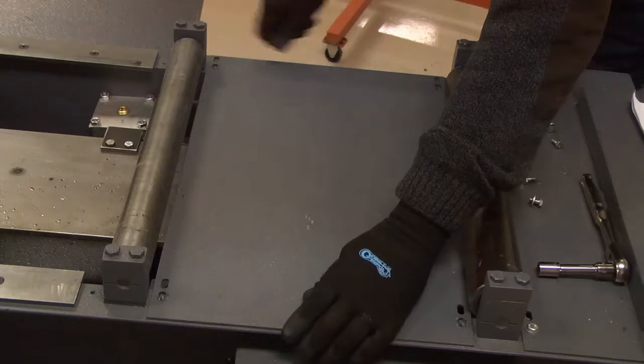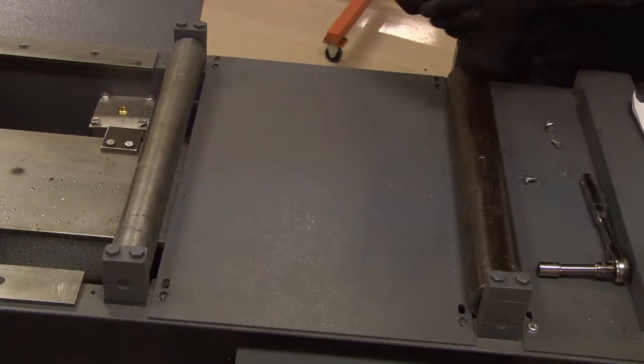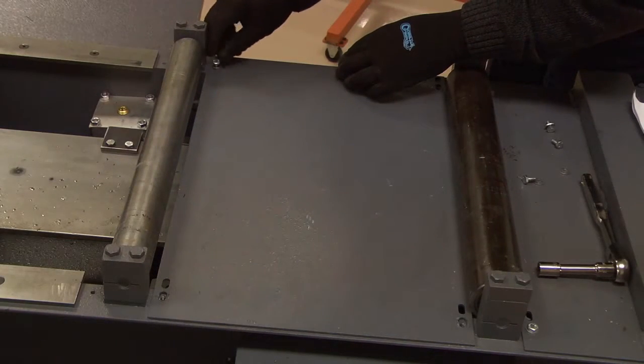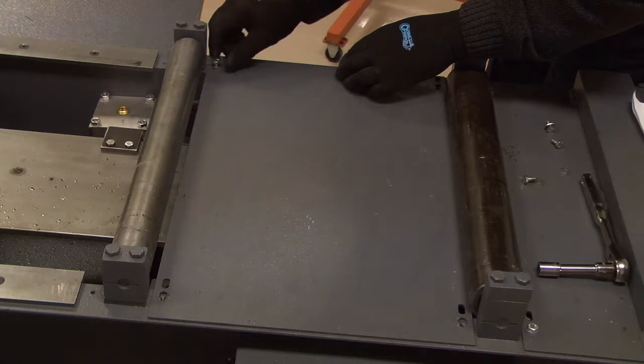Replace the large inspection plate back onto the top of the feed table and bolt it securely back down to the feed table frame rails.